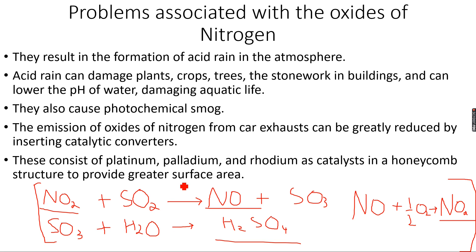The other problem associated with the oxides of nitrogen is that they cause photochemical smog. This creates a lot of problems for flights because of low visibility, and photochemical smog also causes respiratory problems like asthma.